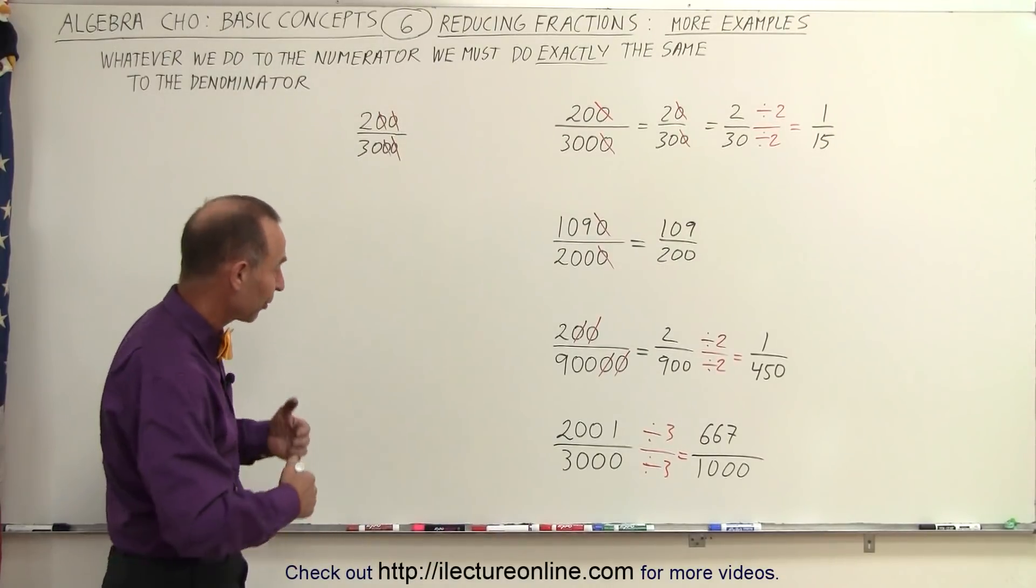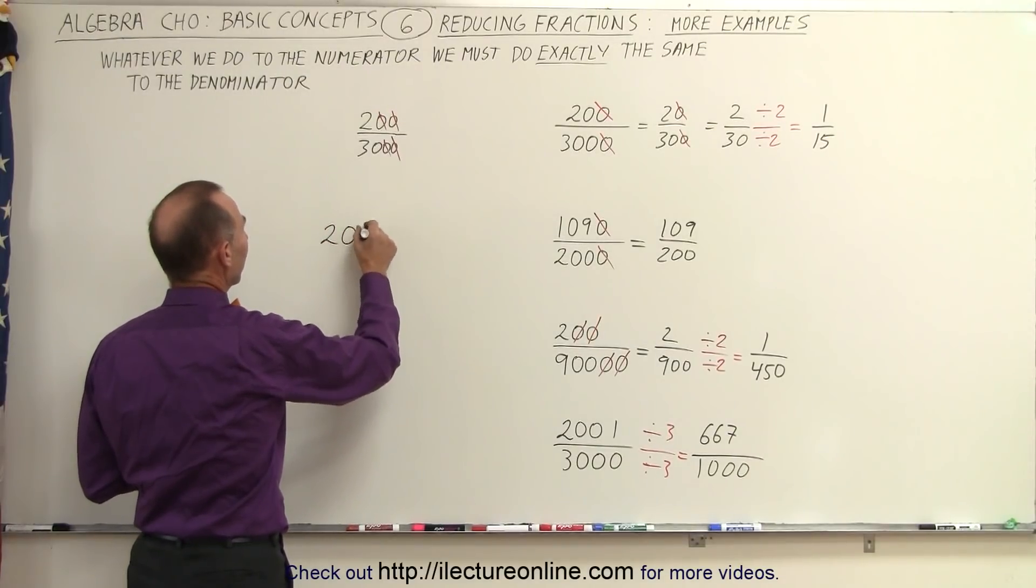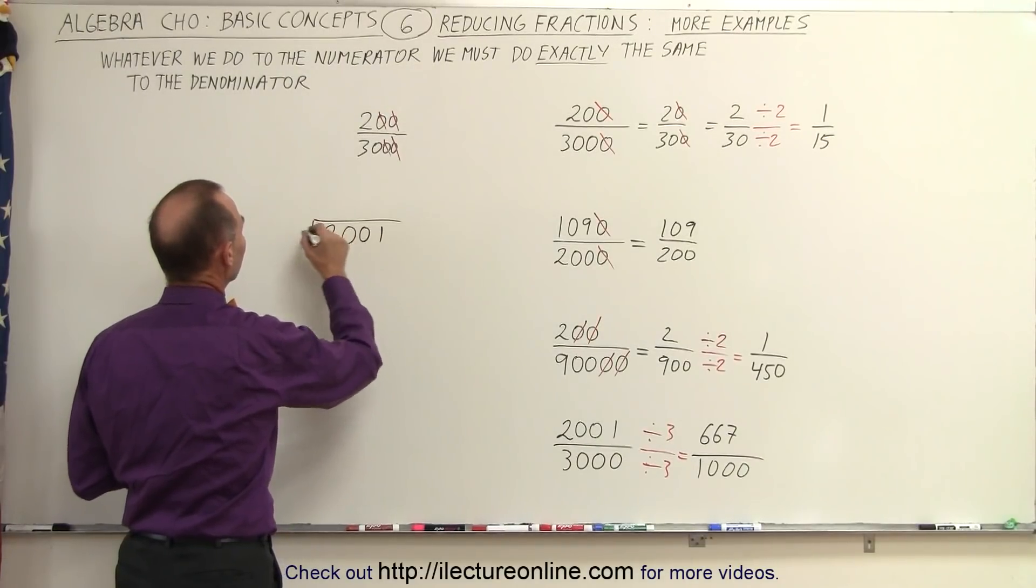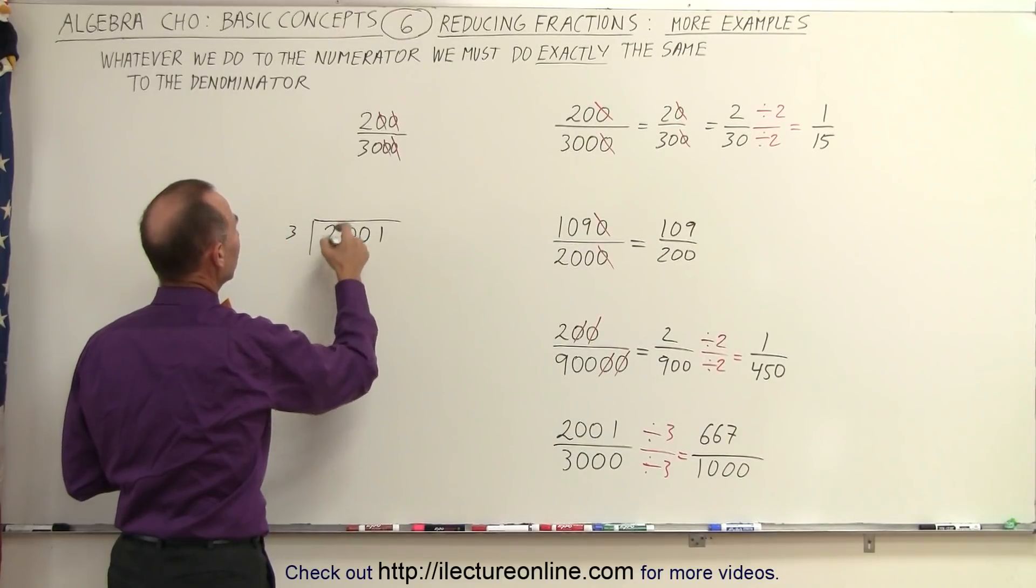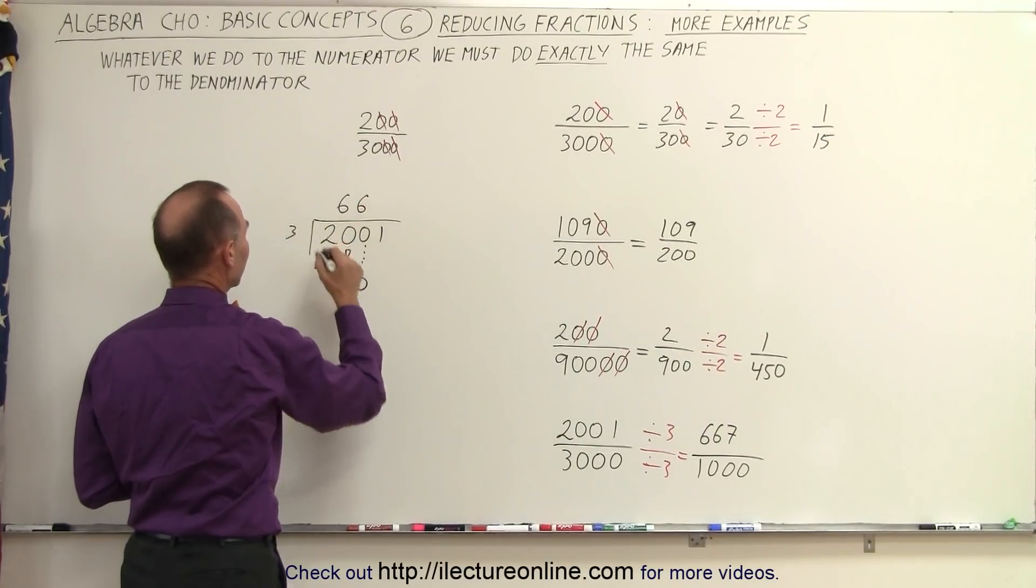So let's go ahead and do that. 2001, let's divide it by 3. 3 goes into 20, 6 times. 6 times 3 is 18. That gives us a remainder of 2. Drop down to 0. 3 goes into 20, 6 times. 6 times 3, that's 18.